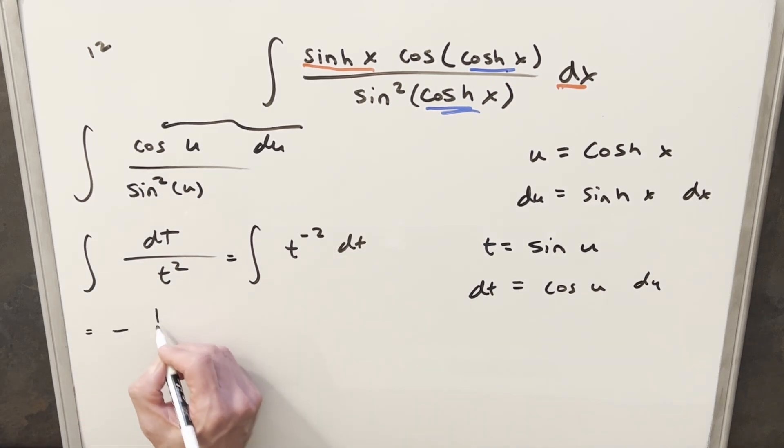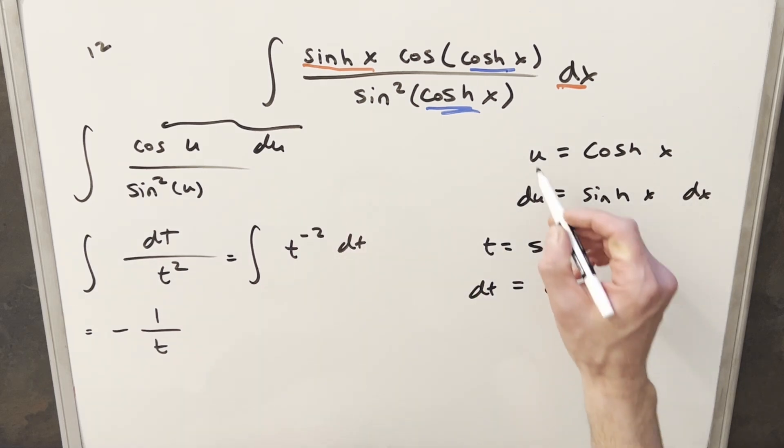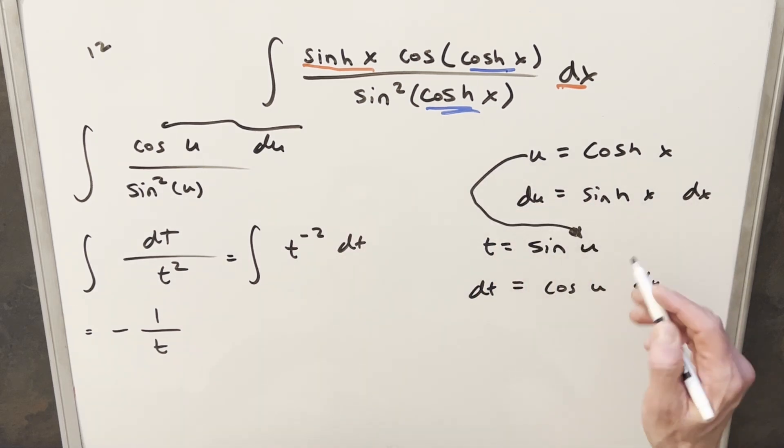So integrating this, we just get -1/t. And so now I just need to back substitute to finish this off. But let's try to do it so we don't have to back substitute twice. What I can do is take my u and back substitute it here first.